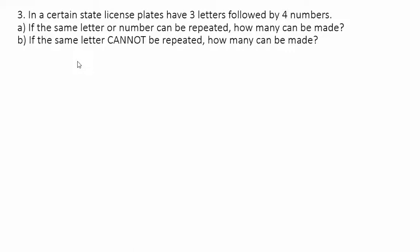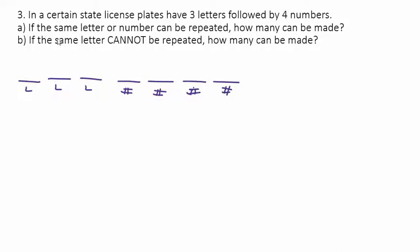Number three: in a certain state, license plates have three letters followed by four numbers. We need a letter, letter, letter, number, number, number, number. If the same letter or number can be repeated, how many license plates can be made? There are 26 choices for each letter position and 10 choices for each number position. We could make a tree diagram, but with 26 branches at each step it would be completely impractical.